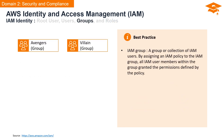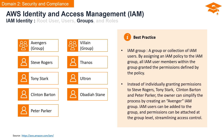An IAM group refers to a collection of IAM users. By assigning an IAM policy to the group, all IAM user members within that group are automatically granted the permissions defined by the policy. For example, instead of individually assigning permissions to Steve Rogers, Tony Stark, Clint Barton, and Peter Parker, the owner can simplify the process by creating an Avenger IAM group. Permissions attached at the group level streamline access control, making it more efficient and manageable.